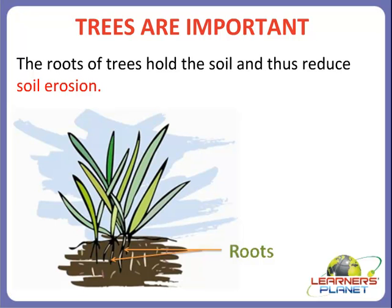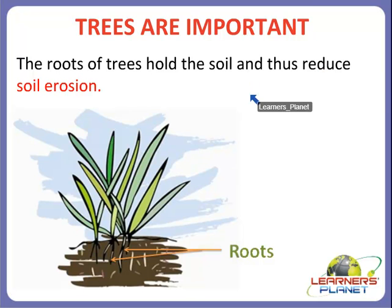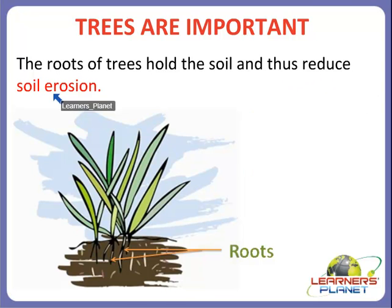Now we will first study about trees. How important are trees for our life? Trees help us in many ways. We use wood for building and furniture, etc. The wood used for buildings and furniture is called timber. Also, the roots of trees hold the soil and thus reduce soil erosion.